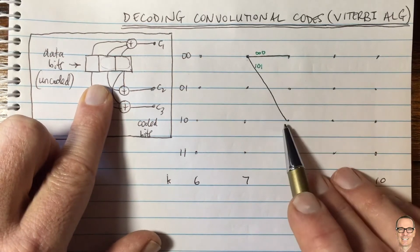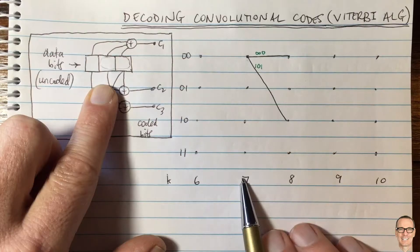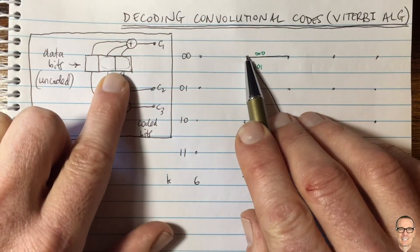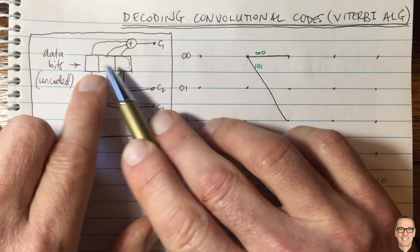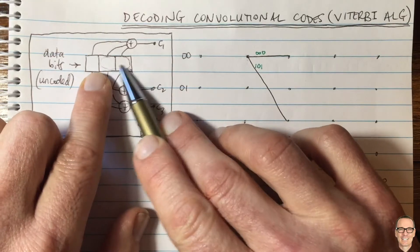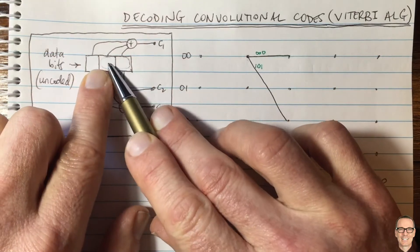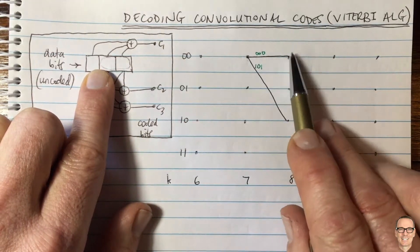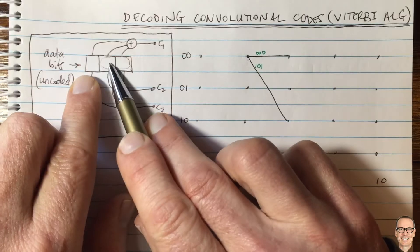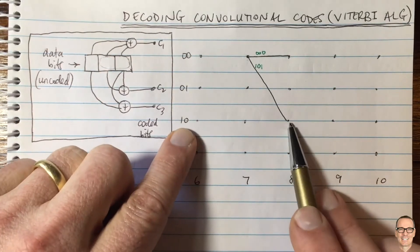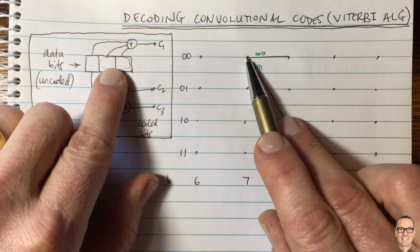I've drawn two branches in the trellis to get us started. Let's say we start in state 00 at time 7. From there, we can only transition to two different states because we have binary input. If the next bit shifting in is a 0, the next state is still 00. If it's a 1, the next state becomes 10 — that's this state down here. These are the two branches possible when you are in the 00 state.